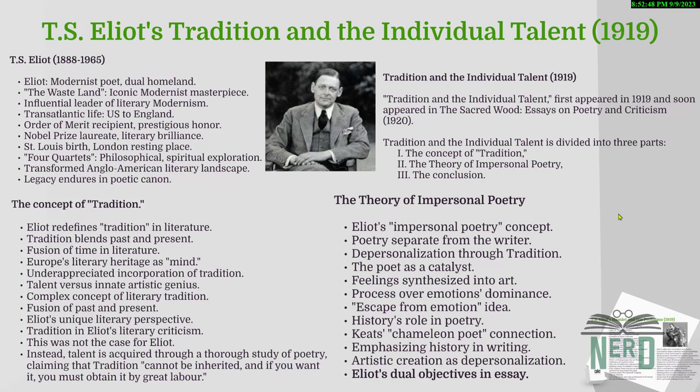First up, Eliot dives into what tradition means in poetry. Then there is the theory of impersonal poetry — Eliot argues that poets should sort of disappear into their work. It's not about them; it's about the poetry itself. Lastly, Eliot wraps it all with a conclusion, tying everything together about tradition, poetry, and the role of the individual poet in the grand scheme of things. Now let's talk about the concept of tradition. T.S. Eliot felt that poetry didn't give tradition the love it deserved in literature — instead they often criticized it. He saw it as a hidden gem in literary criticism, waiting to be discovered.